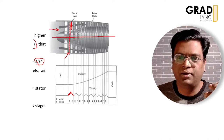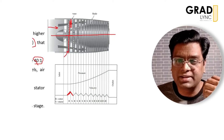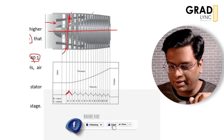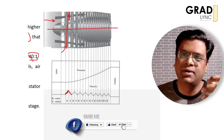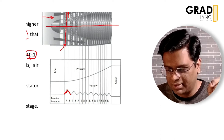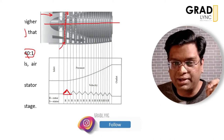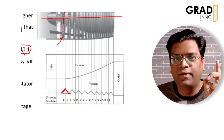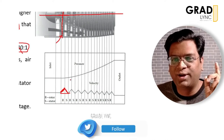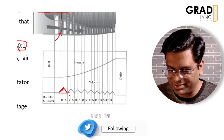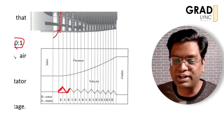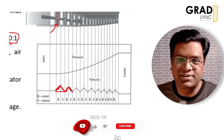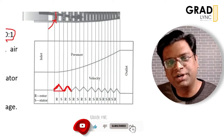Bernoulli's equation tells us that for subsonic incompressible flow, velocity and pressure are inversely proportional. So when pressure increases, velocity reduces — the pressure rise happens due to a reduction in velocity. At the end of one stage, the velocity returns to its initial value at which it entered the compressor stage. In summary: rotor blades increase the incoming kinetic energy, and the stator converts that kinetic energy into pressure energy.